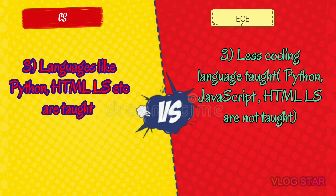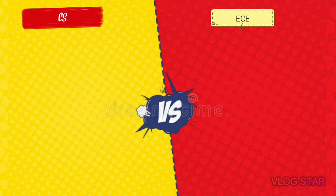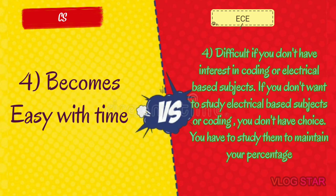Languages like Python, HTML, and JavaScript are not taught to ECE students. But if you belong to ECE branch and have interest in coding, you can learn these languages through coaching or online courses. Programming becomes easy with time — the more you practice, the more you learn. CS branch is somewhat easy, while electrical is termed as the evergreen branch of engineering. It will be difficult if you don't have interest in coding or electrical-based subjects. To maintain your percentage for placement, you have to score good marks in both coding and core branch subjects.